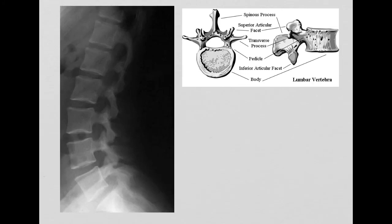Today we are going to be looking at the anatomy of the lumbar spine, and we are going to start with a lateral view of the lumbar spine. To your left will be the X-ray image, and to your right is the drawing or schematic that we will use to identify individual structures on each vertebra.